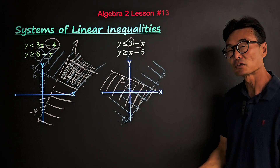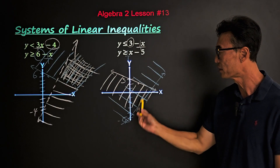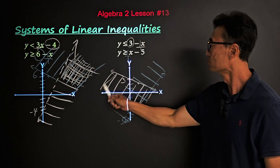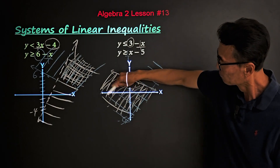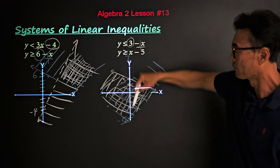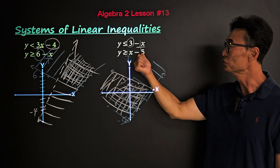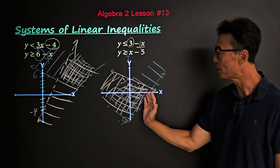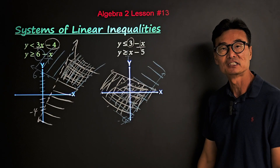The intersecting shading area — the solution region — is right here. The answer to the graphs of these two inequalities is this region, above the second inequality and below the first inequality.